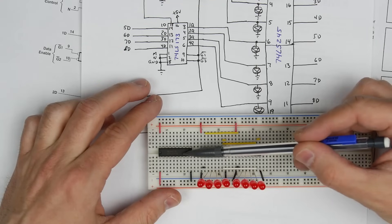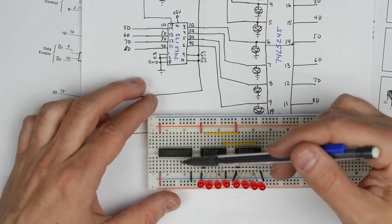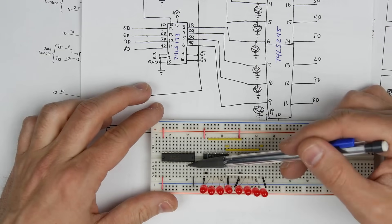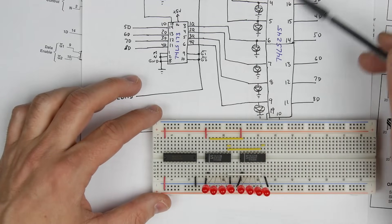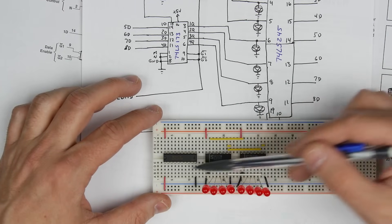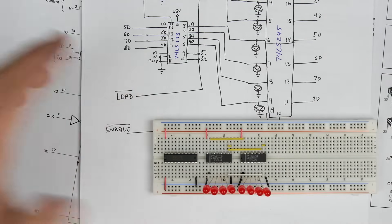And actually, one of the reasons I'm using the 245 specifically is because of that. It just makes the wiring easier, because you can set the direction as one direction or the other. So you might wonder if you're wondering why we're using this bi-directional chip, but then only using it in one direction, it's actually just because it makes the wiring easier. And it doesn't cost any more than any of the other chips.